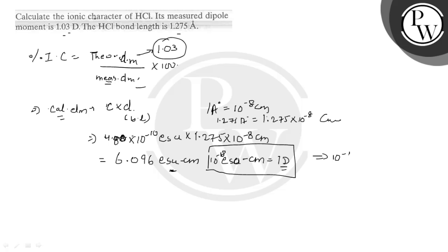10 to the power minus 18 ESU centimeter is 1 debye. So we can say that 6.096 debye is given here.